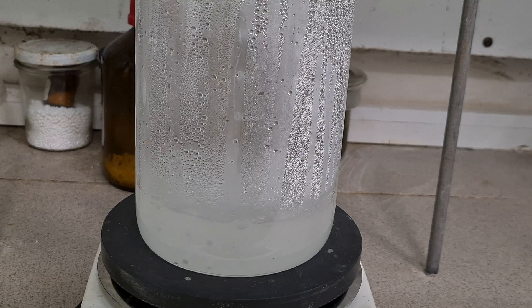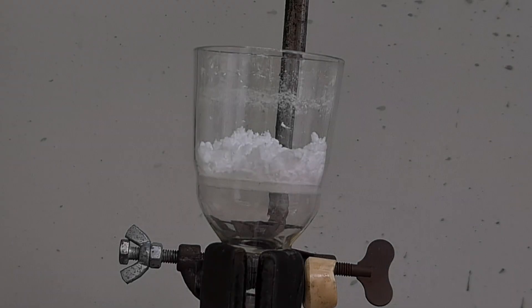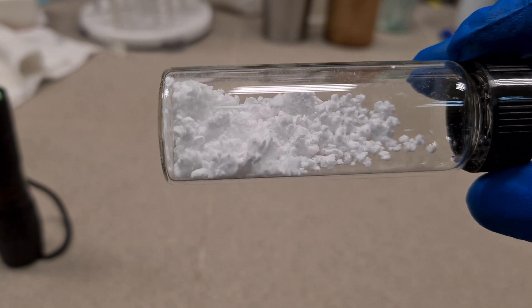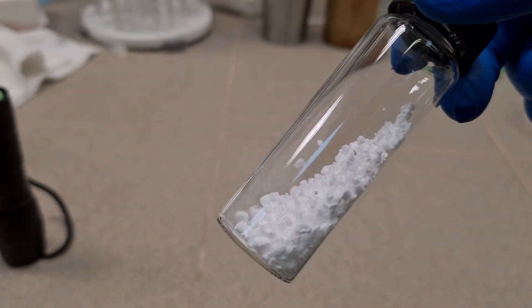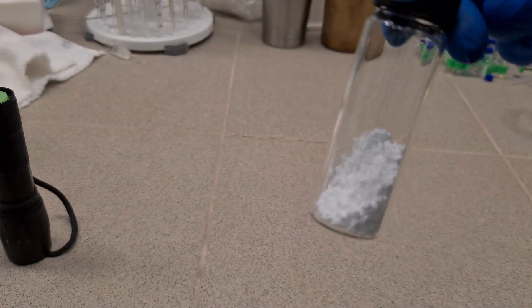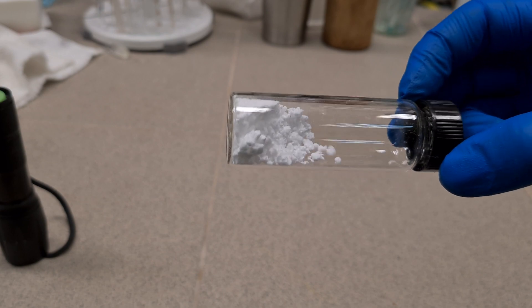Filtrate could be evaporated to recover unreacted thiourea. Nice! We have successfully prepared 6g of pretty pure product, which corresponds to 26% yield. I think that my peroxide wasn't concentrated enough, because where is my 3g of TUDO? Whatever. Let's go to test it.